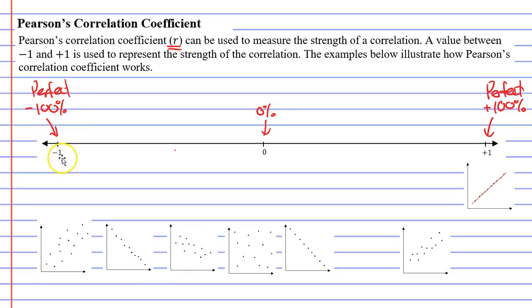What about the score of negative 1? Well, here's an example here. When I draw the line of best fit, every single point lies on the line, and because it's going downhill, it's negative. So we give it a score of negative 1.